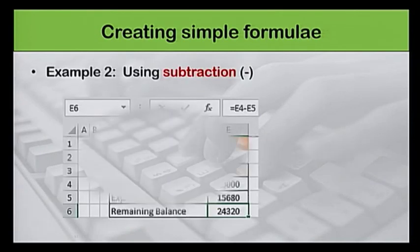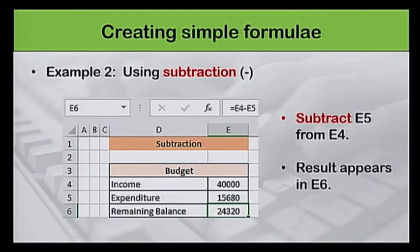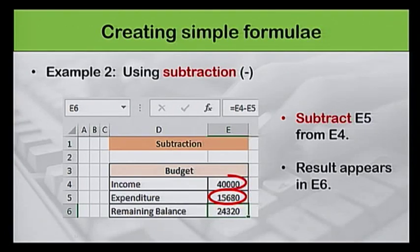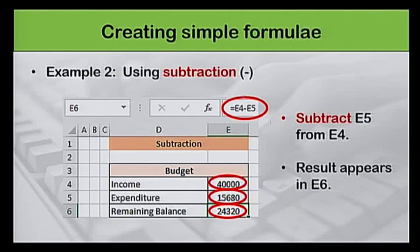Let us have a look at another example, this time using subtraction. In this example, we have to calculate the remaining balance. The expenditure value in cell E5 is subtracted from the income value in cell E4. The result appears in cell E6. The formula used here to calculate the remaining balance is equal to E4 minus E5.